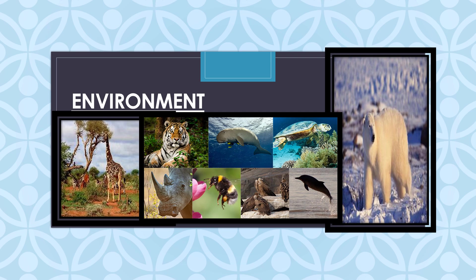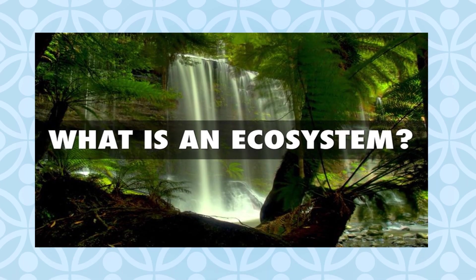Everything that surrounds and affects the life of an organism forms the environment. For example, a lion in the forest is an example of an organism in an environment. The forest has innumerable other things too — insects, other animals and plants. They also have non-living things such as air, water, soil and minerals. There is also a cultural component in the environment which includes the impact of human activity. All these constitute the environment.